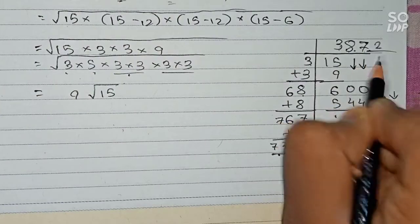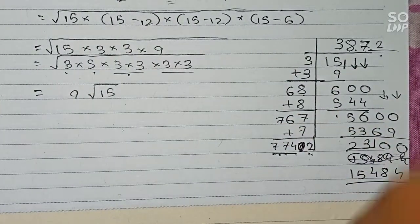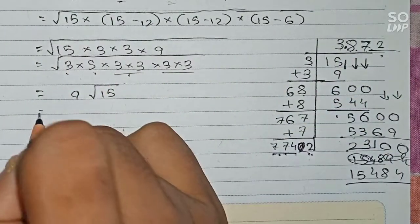So here 3872. Here at 15 we have ended, and after that we give the decimal point. So therefore 9 times 3.872.